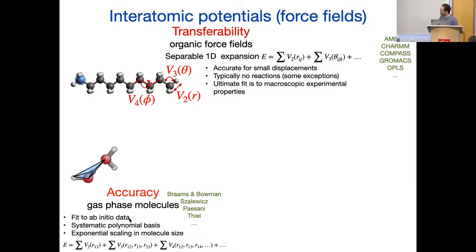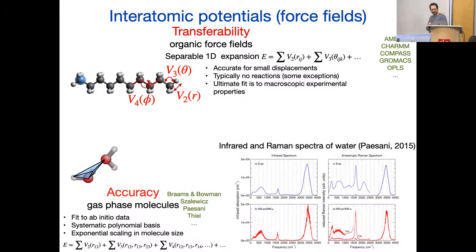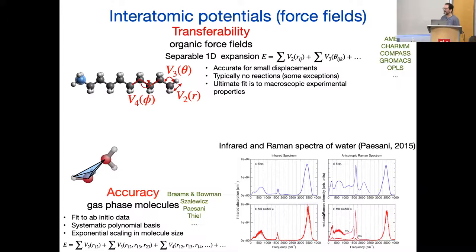This runs out of steam — people have been doing this for 20 years but the number of atoms they can treat goes up very slowly. When you do this well, it really works. Here I'm showing you experimental and calculated spectra for water, derived from modeling one and two water molecules; you can then play tricks and deduce the spectrum for bulk water, and this is exquisite accuracy — reproducing infrared and Raman spectra details without needing anything better.